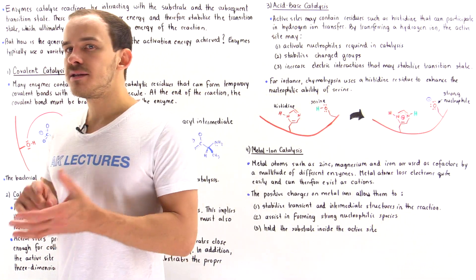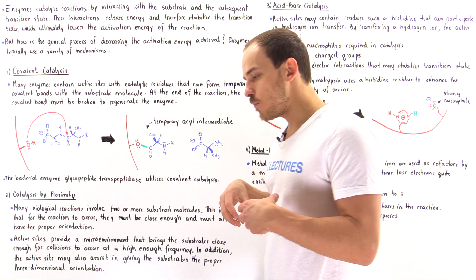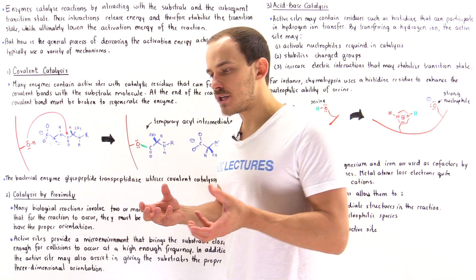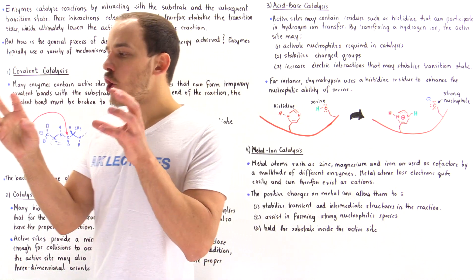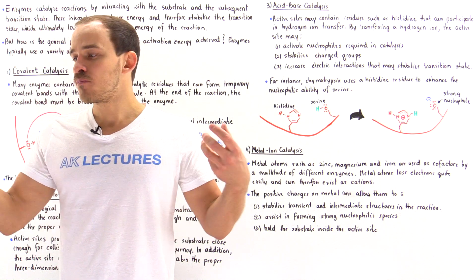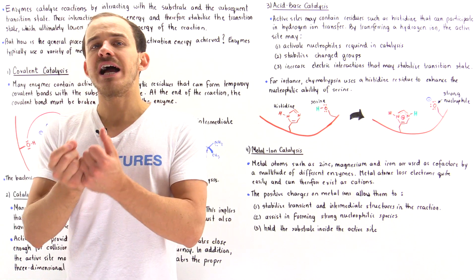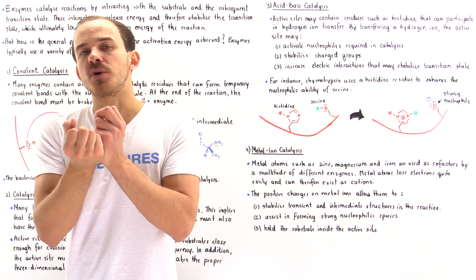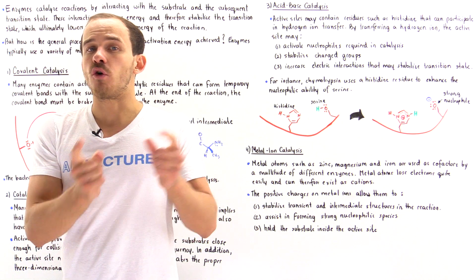Let's move on to method number two: catalysis by proximity and catalysis by orientation. If we recall the collision theory from basic chemistry, for a reaction to actually take place, those two substrate molecules that are about to react must actually collide — they must collide with enough energy, and they must collide with the proper orientation. Only when the collision takes place with the proper orientation and with the right amount of energy do we actually form the product molecule.